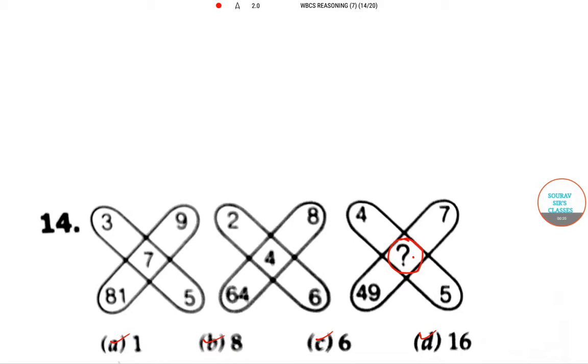So let's see, these four numbers like 4, 7, 49, 5 are somehow related in this position.